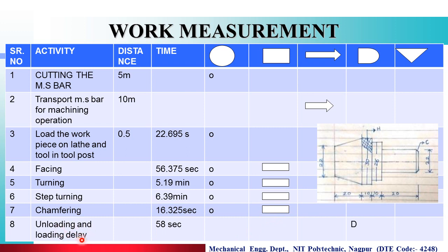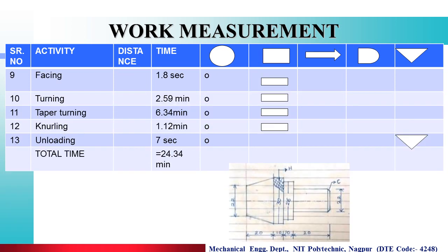Next is the unloading and loading delay — you unload and then place the job in the tool post. The next facing operation takes 1.8 seconds. Then turning to a diameter of 22 mm takes 2.59 minutes. Next is taper turning to a length of 20 mm, then knurling for 10 mm, and finally unloading — completing the work measurement operations.